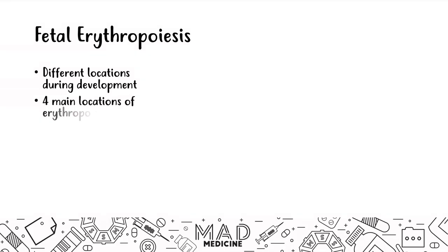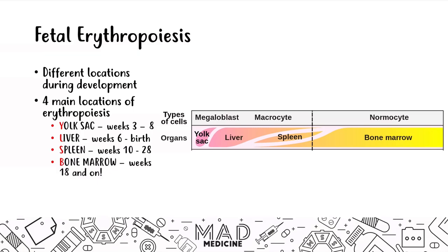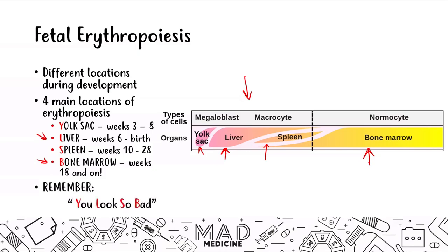In a fetus, there are four main locations of erythropoiesis: the yolk sac, the liver, the spleen, and the bone marrow. Based on where the fetus is in development, that determines where red blood cells are being produced. The main locations are the liver and the bone marrow. As you can see in this image, the yolk sac and spleen contribute a smaller amount compared to the liver and bone marrow, with bone marrow producing the most. The way I remember this is with the acronym 'You Look So Bad' — YLSB standing for Yolk sac, Liver, Spleen, and Bone marrow.